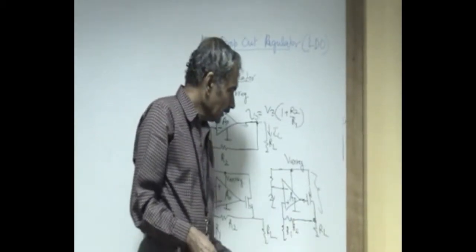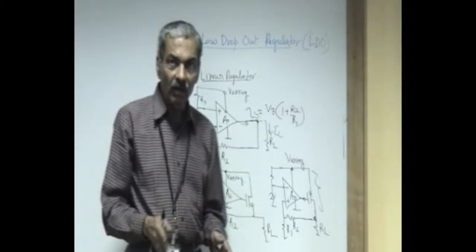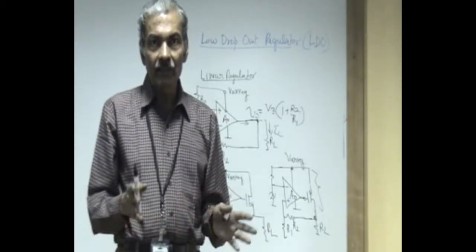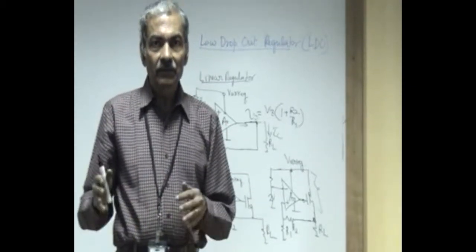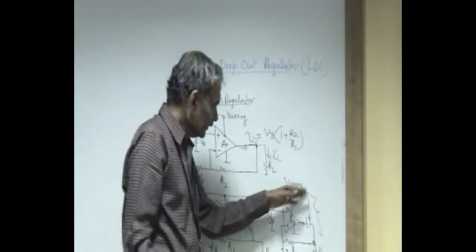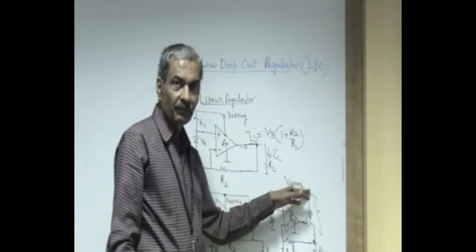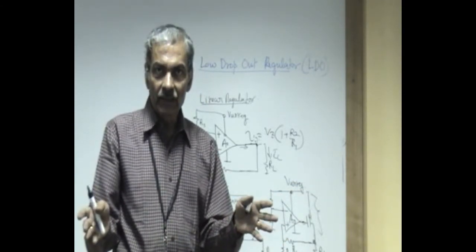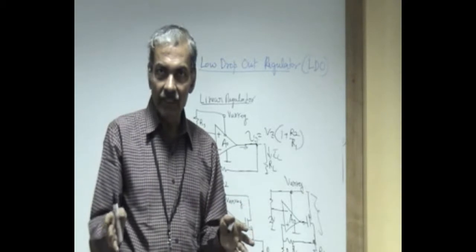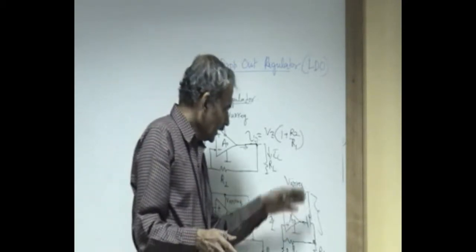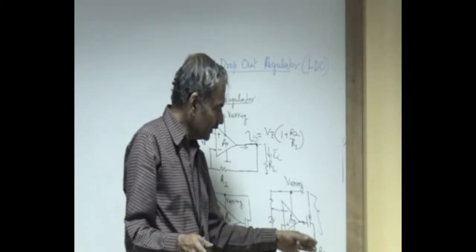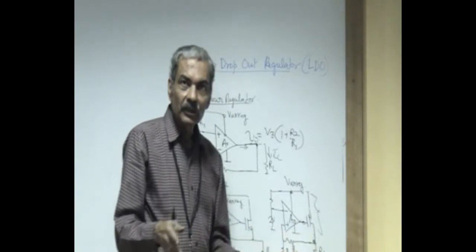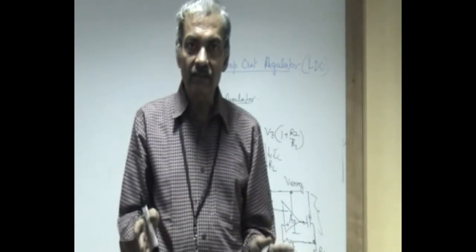So you make sure that you make all the measurements of load regulation, line regulation, ripple rejection. You assume that there is a ripple superimposed over the unregulated supply, which is normally at 50 hertz, or 100 hertz if it is coming from the power line. Then how much of it gets transmitted to the output, that is what is called ripple rejection factor.